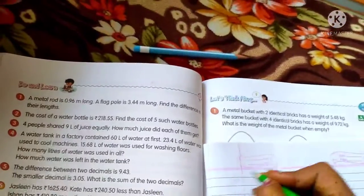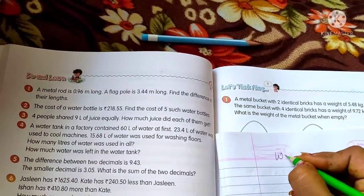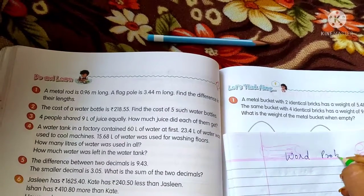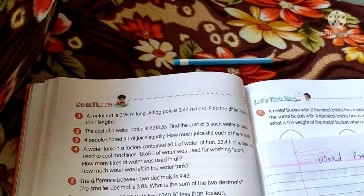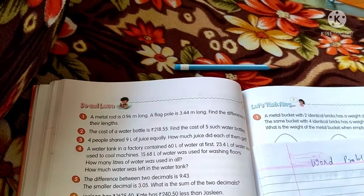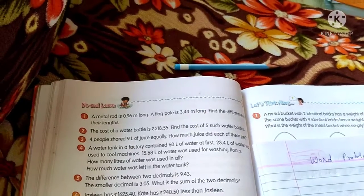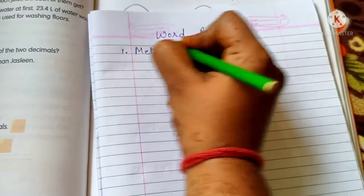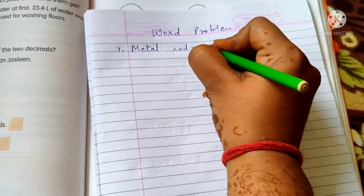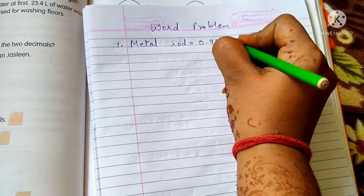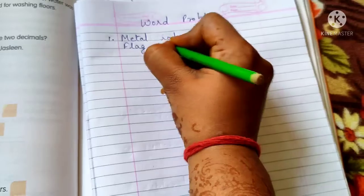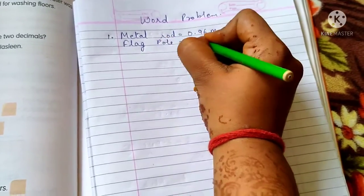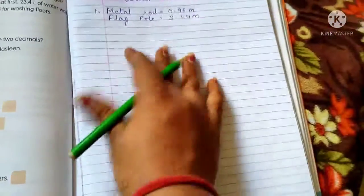First one, a metal rod is 0.96 meter long. A flag pole is 3.44 meter long. Find the difference in their length. So metal rod ka length is 0.96 meter and flag pole is 3.44 meter. We have to find the difference.